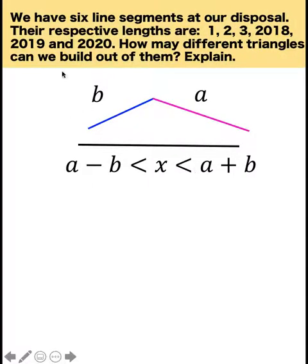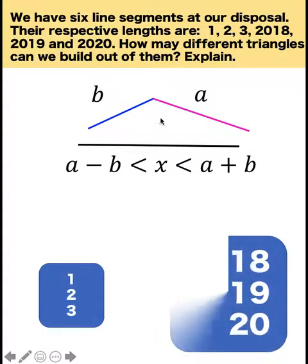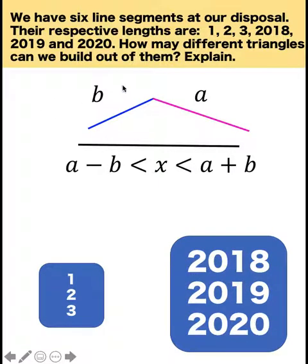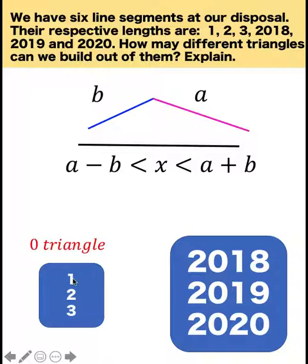Applying this concept to our puzzle, we have lengths 1, 2, 3 and 2018, 2019, 2020. To make our solution systematic, let's group the short sides into one group and the longer sides into another. Applying the triangle inequality, how many triangles can we form given sides 1, 2, and 3? If you add any two sides, say 1 plus 2, that sum must be greater than the third side. But 1 plus 2 is not greater than 3 — it equals 3. Also, 3 minus 2 equals 1, which is not less than the third side 1. So there is no triangle that can be formed with sides 1, 2, and 3.